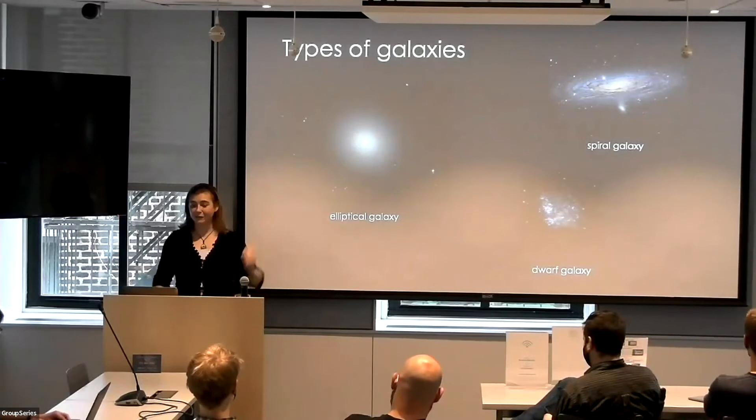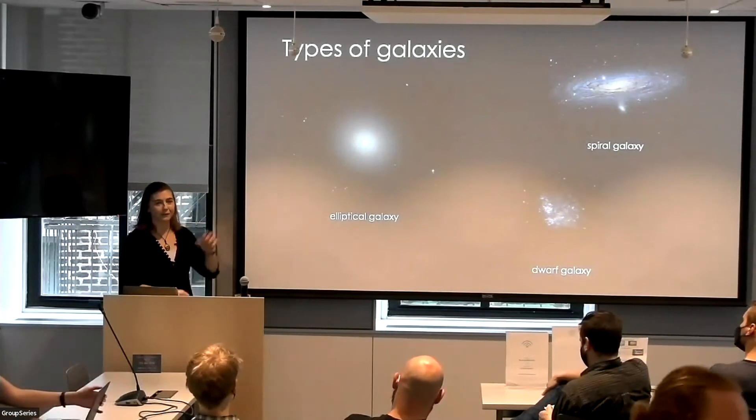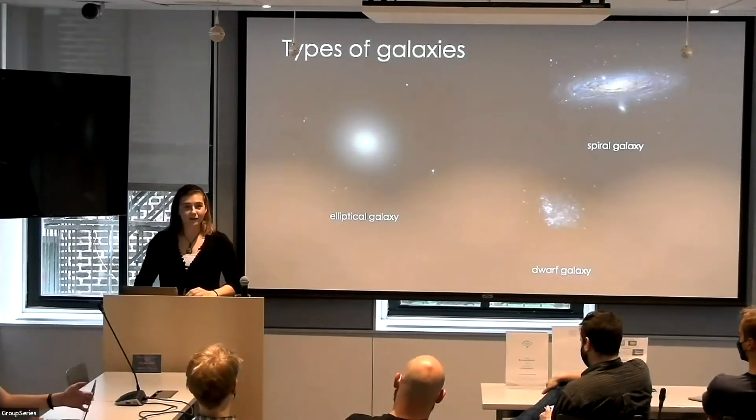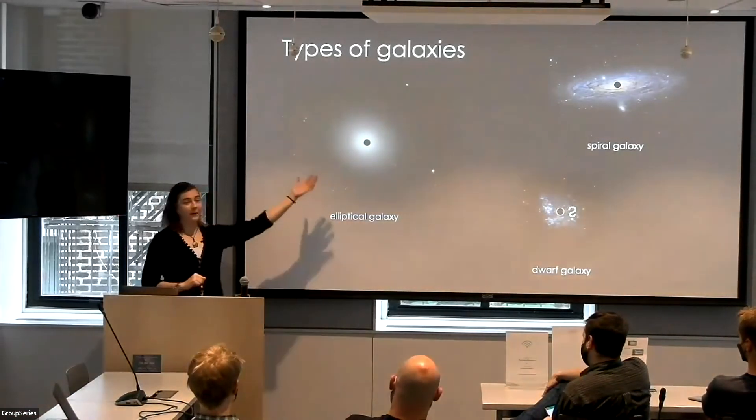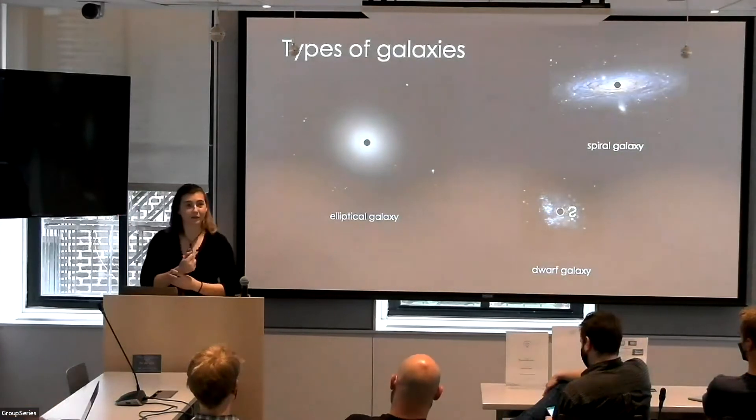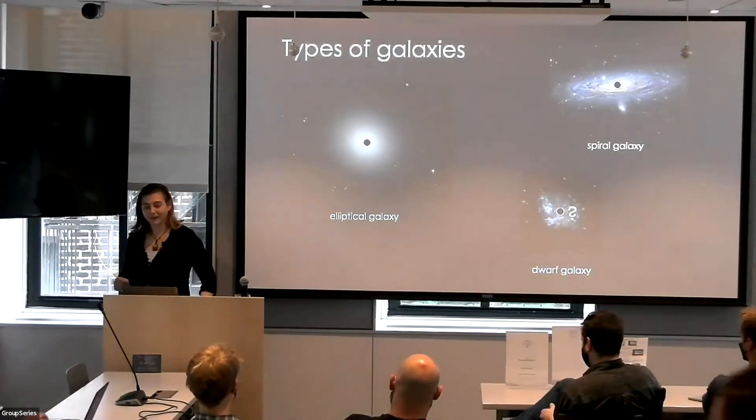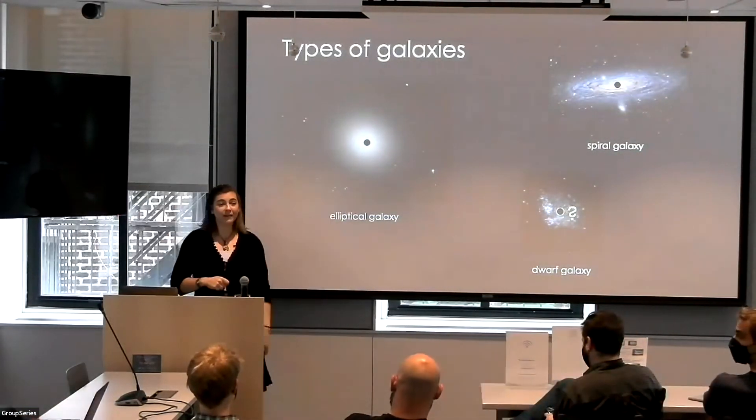Also, Astro 101 level, there's the main types of galaxies. We have ellipticals, we have spirals, we have dwarfs. And they have black holes. At least elliptical galaxies have black holes. Spiral galaxies, at least massive ones, have black holes. Dwarf galaxies, do they have massive black holes?